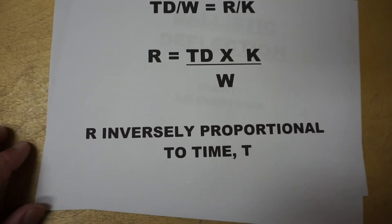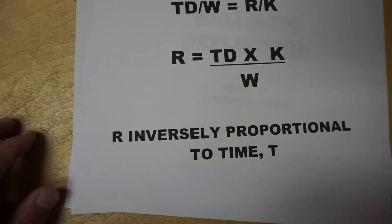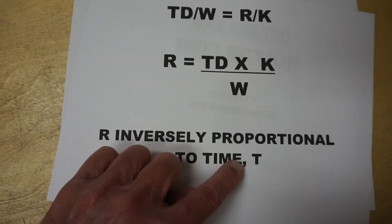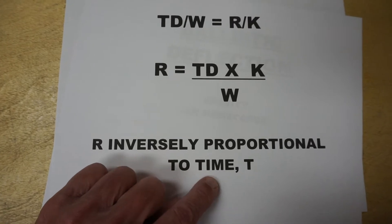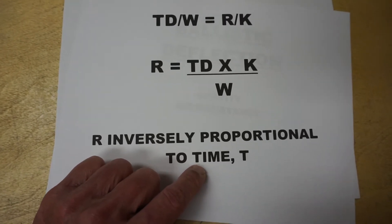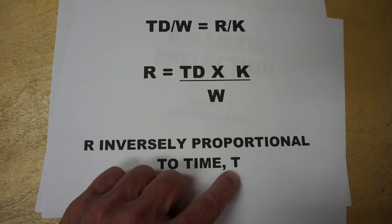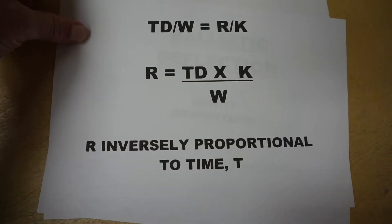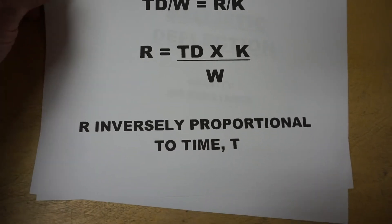It is also important to note that the range of the target is inversely proportional to time. The closer the target is to the bullet being fired, the shorter the time. And the further out the aircraft is, the longer it will take the bullet to strike the target.